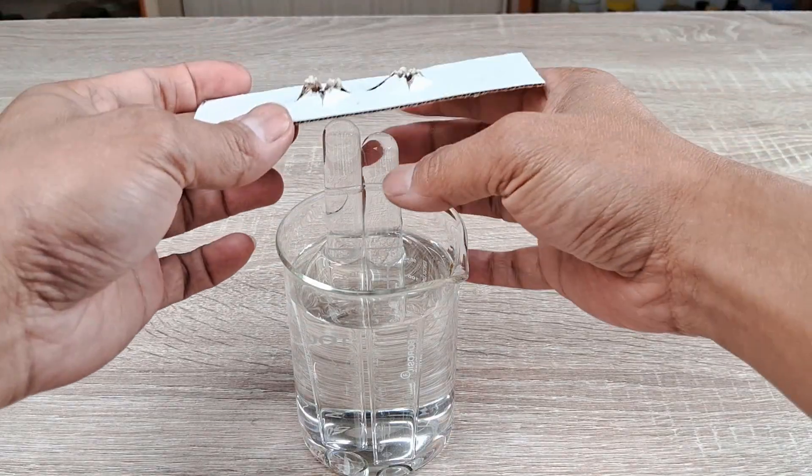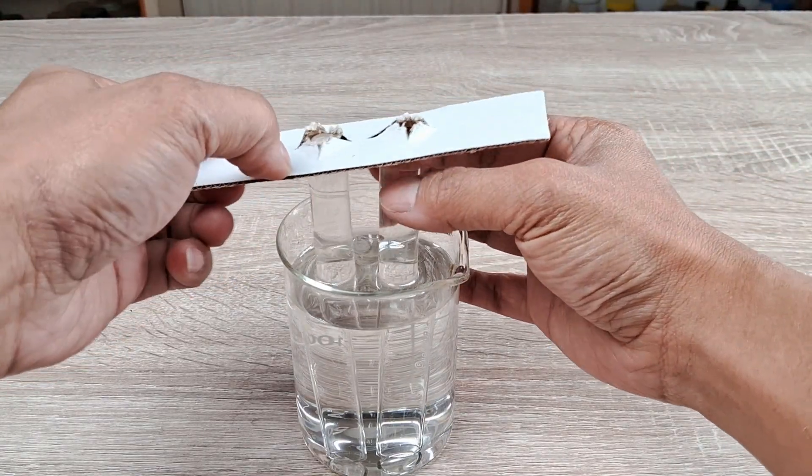You can also support the tubes using a sheet of cardboard with two holes as shown here.